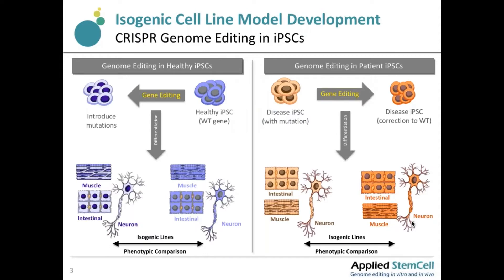Let me give you an example of how we use iPS cells to model disease. On the left panel, we start with a healthy iPS cell line derived from a healthy individual. Through gene editing, we can introduce mutations so that we can generate disease-state iPS cells. These cells can be differentiated into specific cell types relevant to the disease state, and then we can compare the isogenic cell line — basically a healthy cell line versus a disease-state cell line — to study the mechanisms of disease and explore potential therapeutic applications.